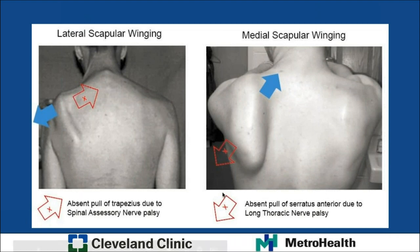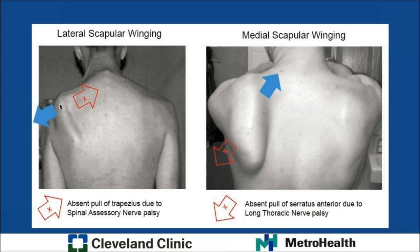Looking at lateral versus medial winging side by side: in lateral winging, you're missing the trapezius force couple, so the scapula rotates down and away from the spine. In medial winging during forward flexion, you're missing the anterior and chest-wall constraint, and the trapezius rotates the scapula toward the midline and upward. The name — lateral or medial — refers to the direction in which the scapula deviates.